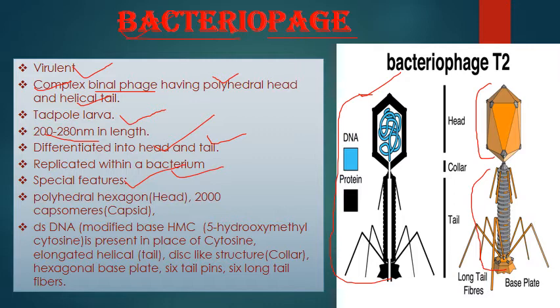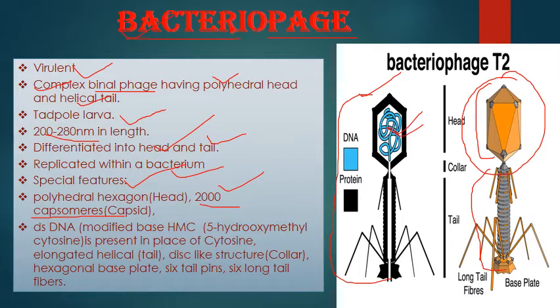Special features of the head: it is polyhedral and icosahedral, made up of 2000 capsomeres — this is very important. Inside the head it contains double-stranded DNA. This DNA is special and modified: the cytosine base is replaced by HMC, which stands for 5-hydroxymethyl cytosine. This is a key difference.